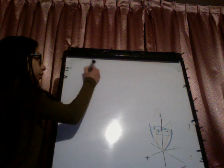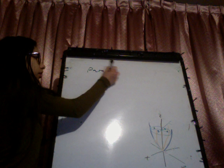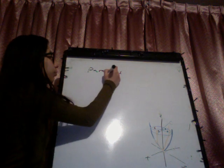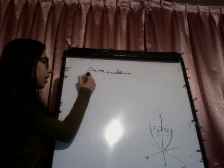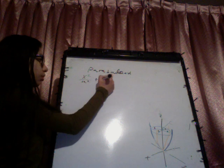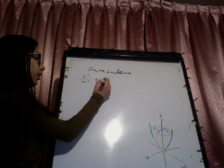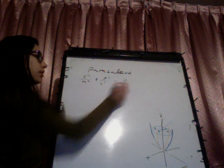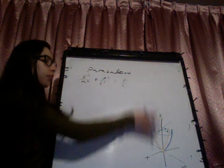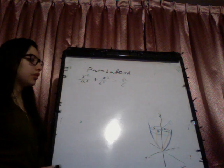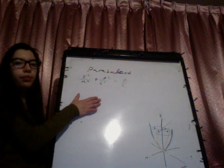Now we're going to see the paraboloid. The paraboloid has the equation x² divided by a² plus y² divided by b² equals c divided by c. This is an example of this paraboloid. I'm going to explain this in detail and then we're going to change the form of the paraboloid.